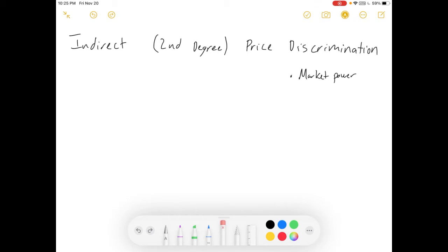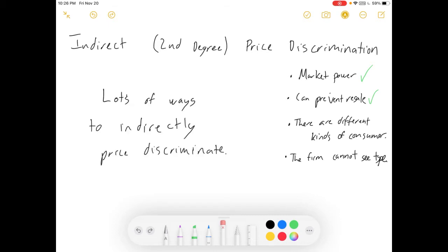First thing, in order to have price discrimination, we need our firm to have market power. They need to be able to prevent resale. And specific to this case, with second-degree price discrimination, we need to have different kinds of consumers, and the firm cannot see the consumer type. These first two options are required for any pricing schemes. The second two are what bring us to second-degree price discrimination. There's different kinds, and we can't tell which kind they are when they walk in the store.